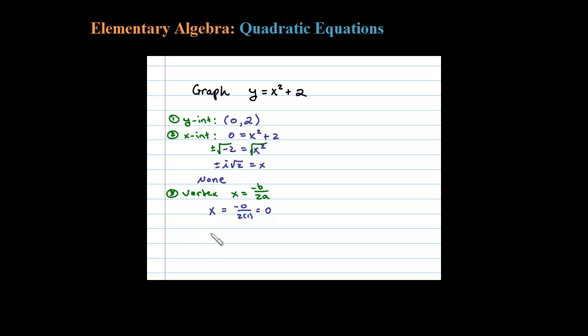When x is 0, the corresponding y-value would be 2. 0 squared is just 0, so 0 squared plus 2 is 2. The vertex is (0, 2). Notice the vertex is the same as the y-intercept.